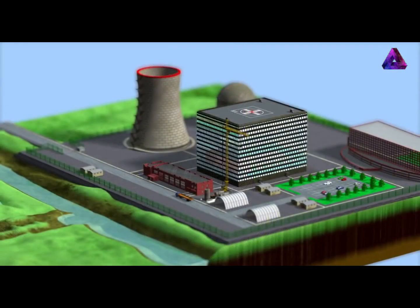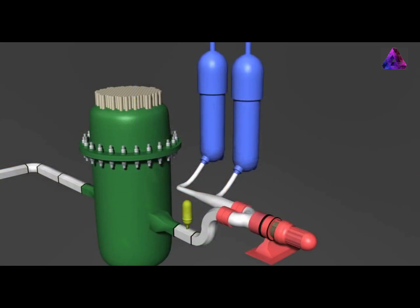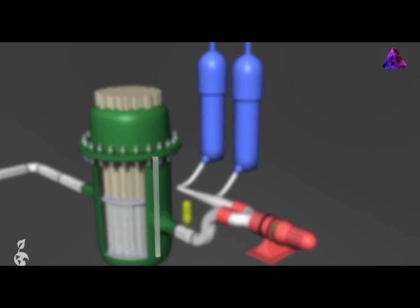The following is a description of the most important components of a nuclear power plant that uses a pressurized water reactor. In the reactor pressure vessel, the nuclear reaction and the associated release of thermal energy takes place. In a pressurized water reactor, the reactor pressure vessel stands about 12 meters tall with walls about 25 centimeters thick. Inside are the fuel assemblies — about 150 such assemblies are installed in pressurized water reactors.